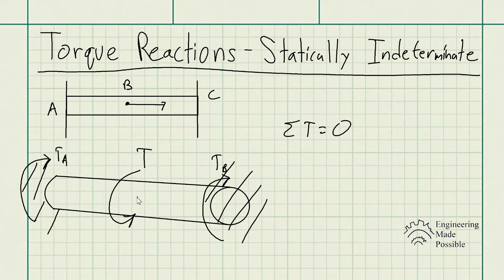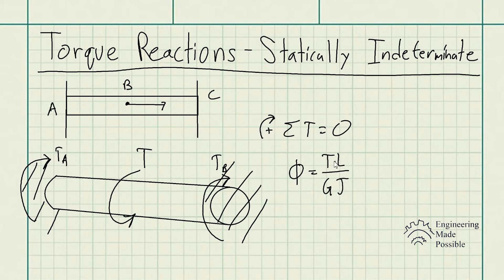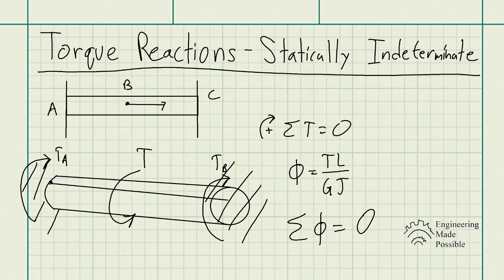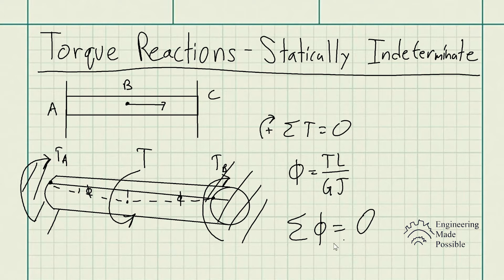The shaft deforms a bit but is in static equilibrium, and we can use a sign convention of positive or negative. In addition to the equilibrium relationship, we also have the angle of twist, which is equal to torque times length divided by GJ. The sum of the angles of twist is equal to zero because the shaft is fixed at both ends — the twist in each segment cancels out. These are the two relationships you'll use to solve for the reactions.